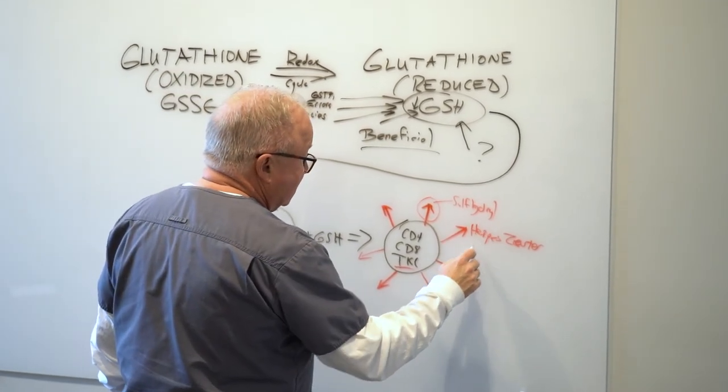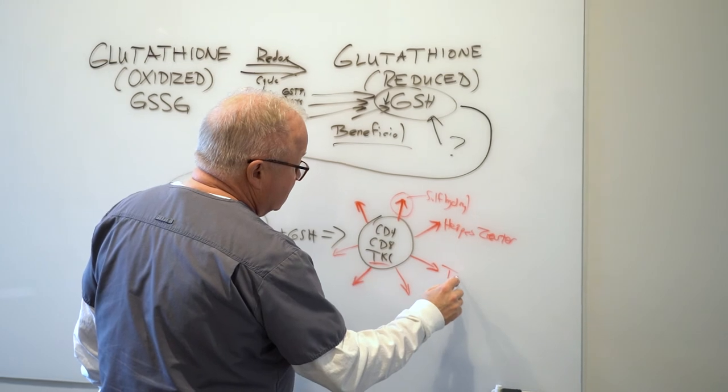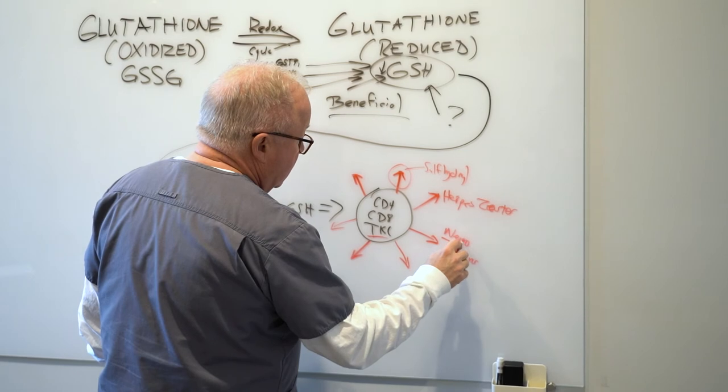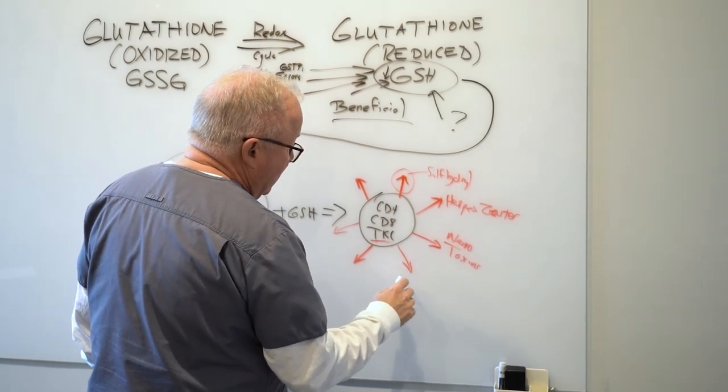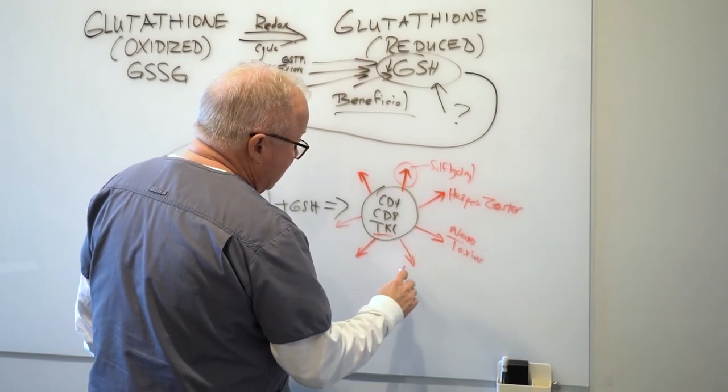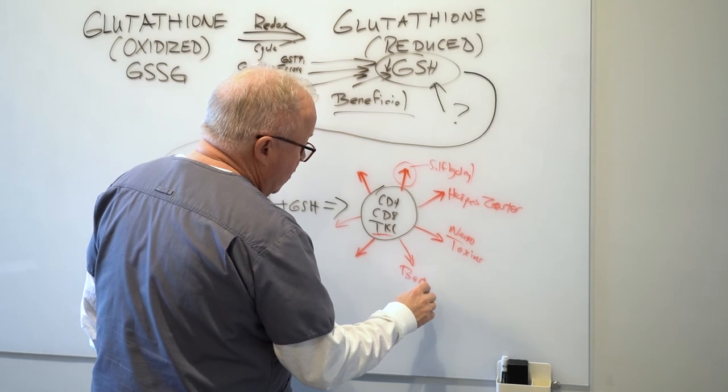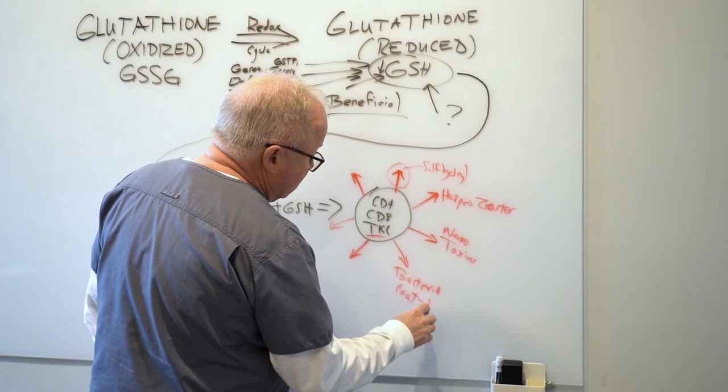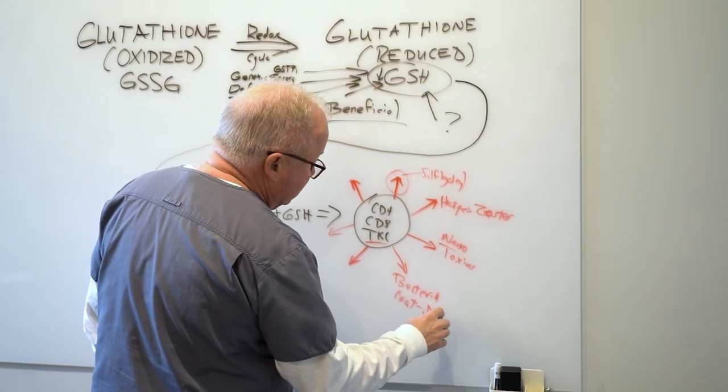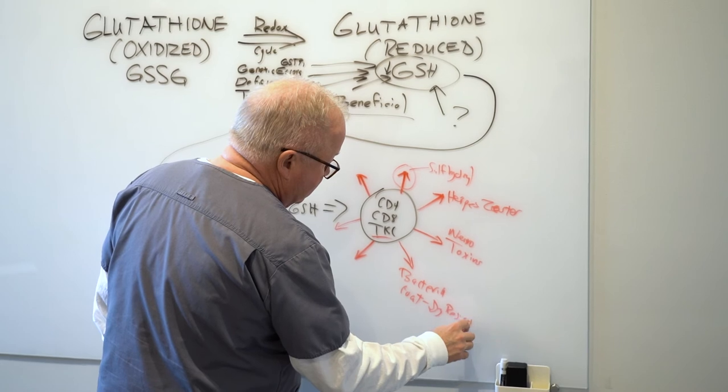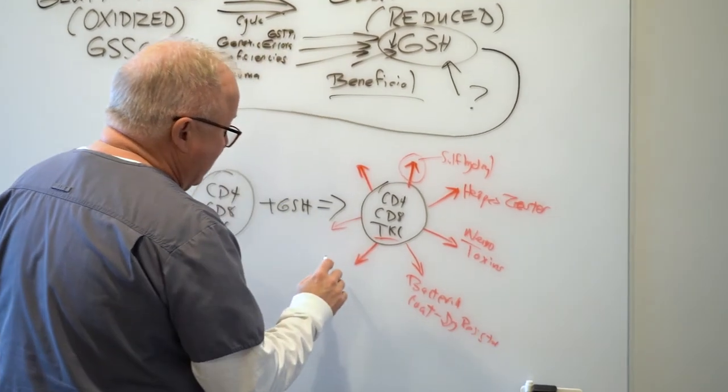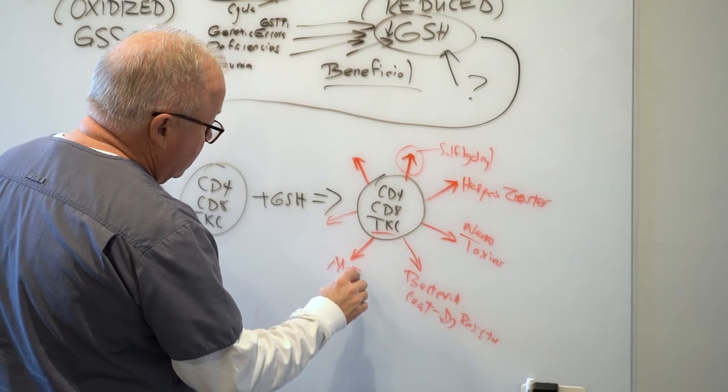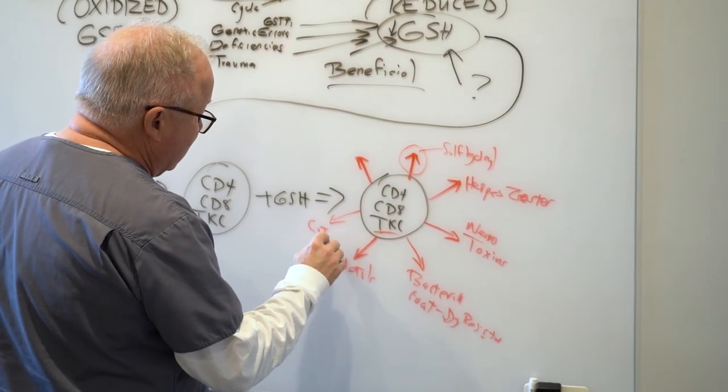So they can grab herpes zoster. They can grab toxins including neurotoxins. They can grab bacteria or the protective coats of bacteria that lead to drug resistance. Look at the drug resistance studies. Sorry for my writing. They can grab heavy metals. They can grab inflammatory cytokines.